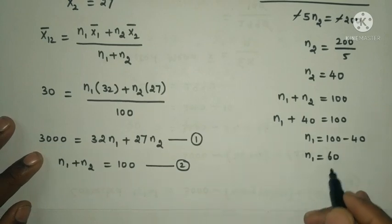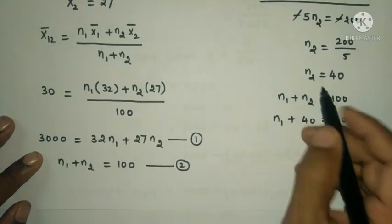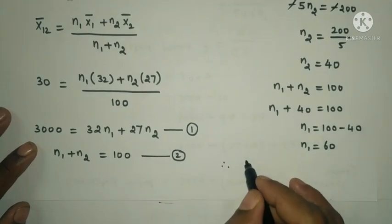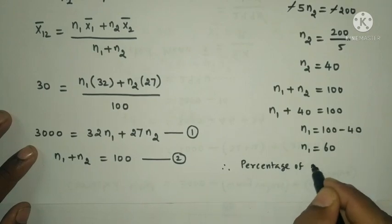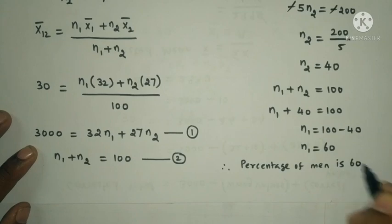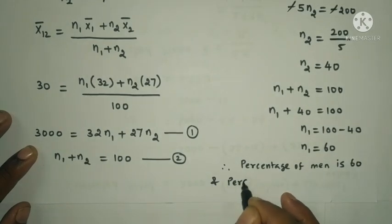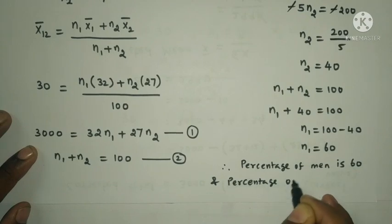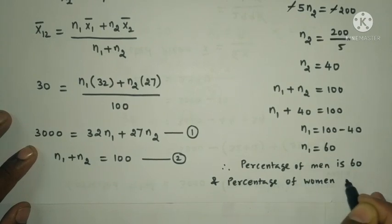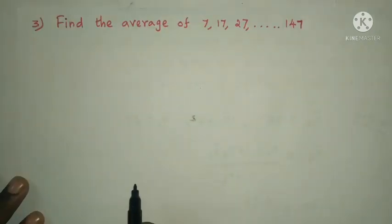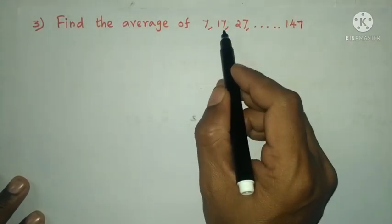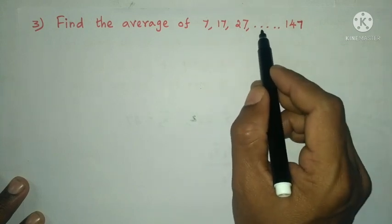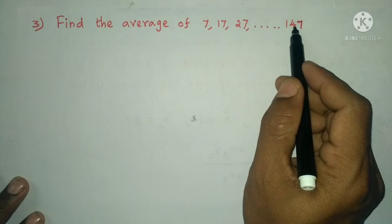Therefore, percentage of men is 60% and percentage of women is 40%. Next question: find the average of 7, 17, 27, ... where the last term is 147.